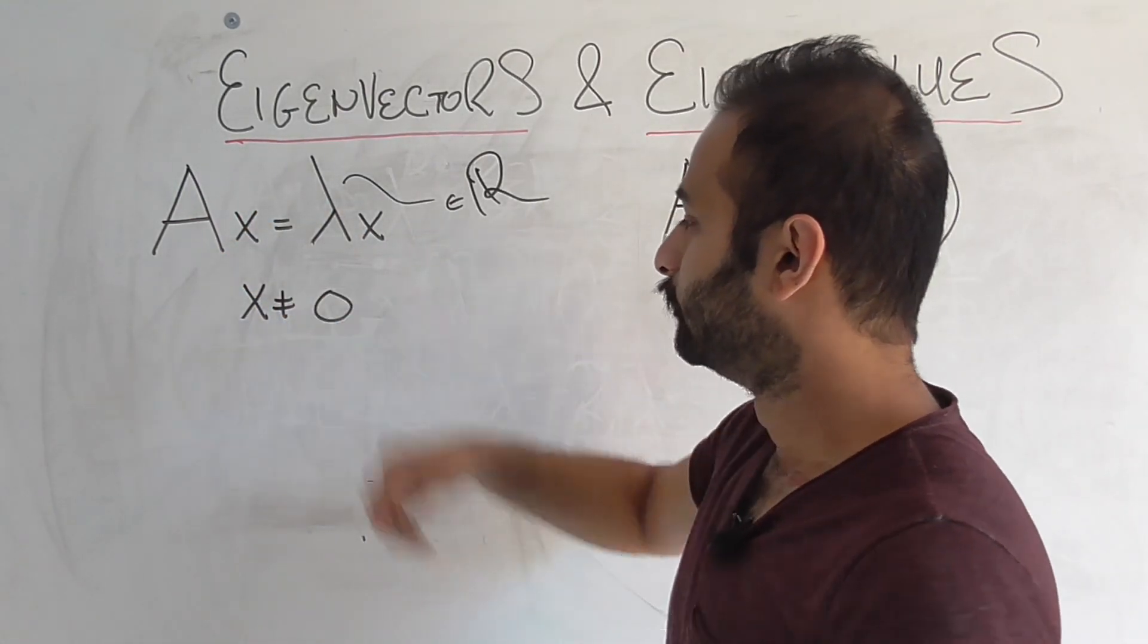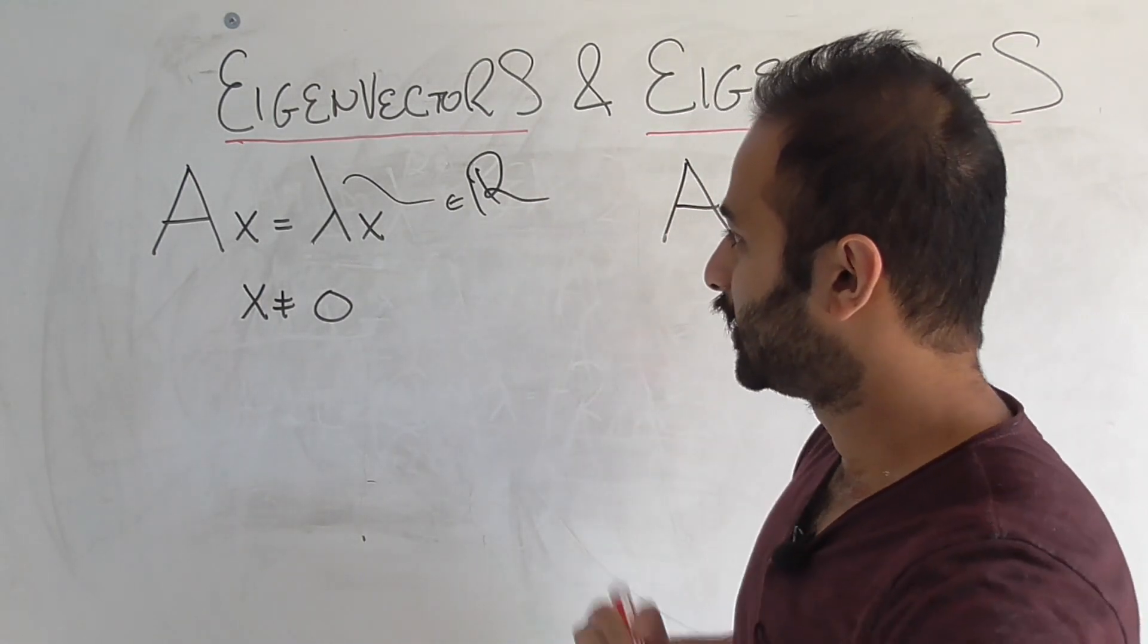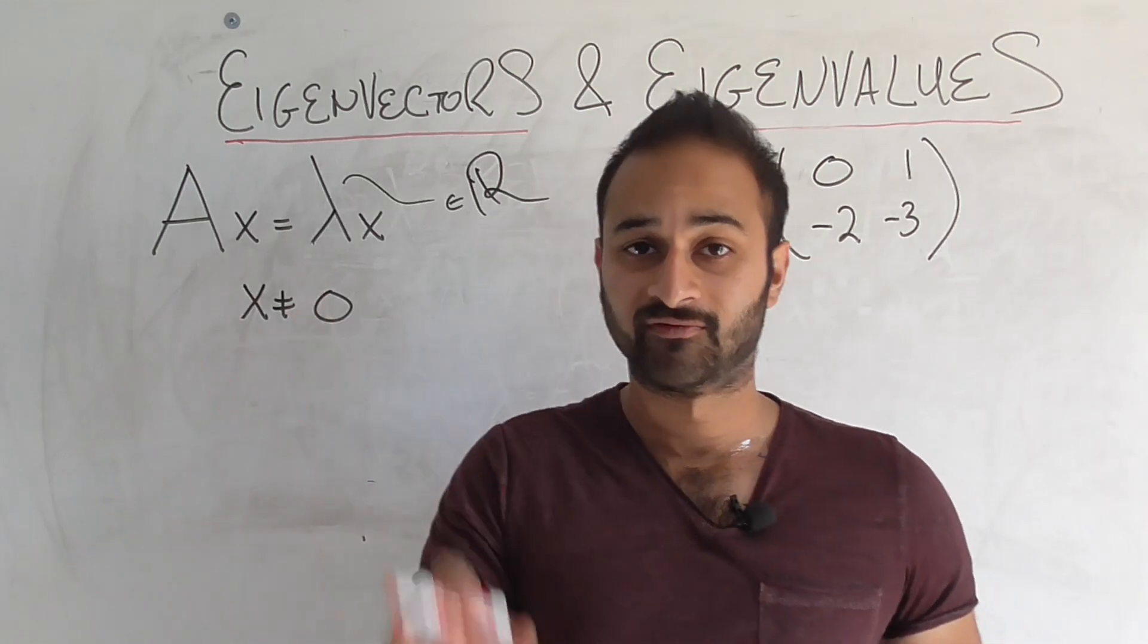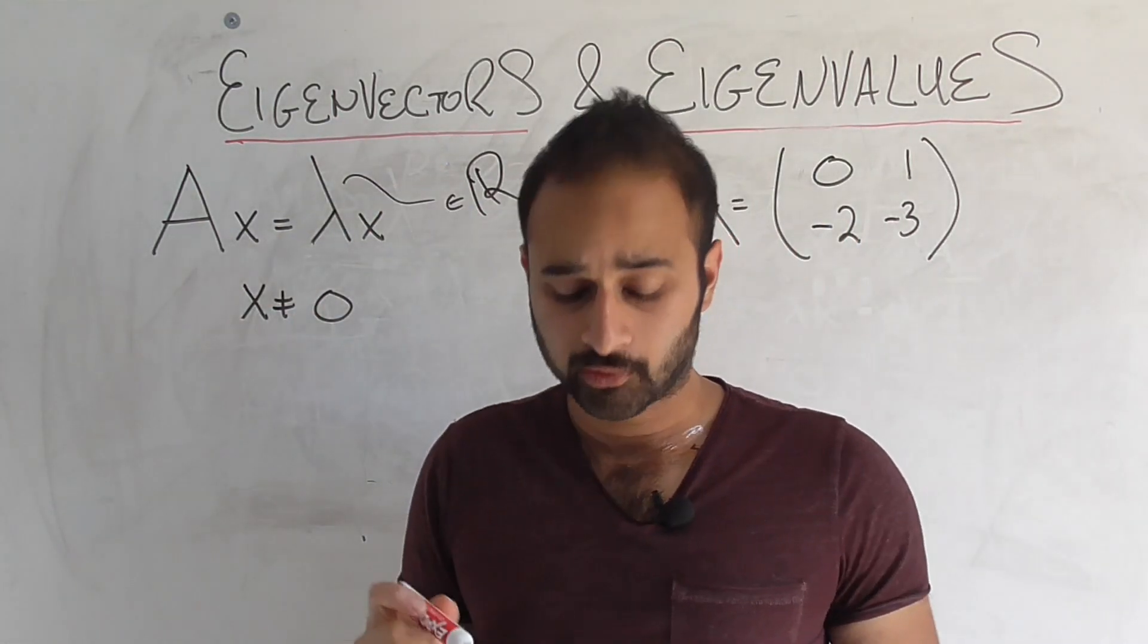And that's all an eigenvector and its corresponding eigenvalue is. So that's one important point to note, is that an eigenvector has a corresponding eigenvalue. So in this case the eigenvector is x, the eigenvalue is lambda.